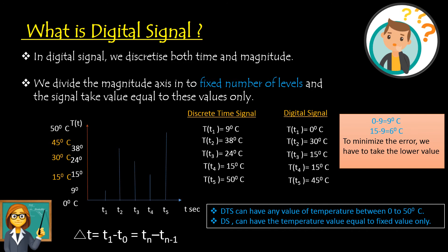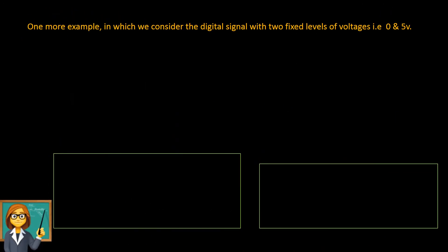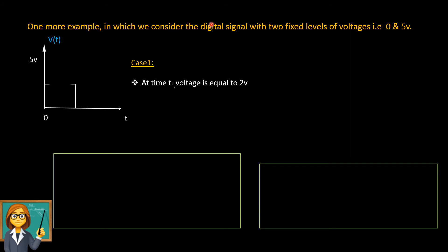With this explanation, I hope you understand what digital signals are and how raw data is converted into digital signals. Now let us consider one more example — a digital signal with two fixed voltage levels: 0 volts and 5 volts. If I try to plot this, I have discretized both the time axis and the magnitude axis, which here represents voltage.